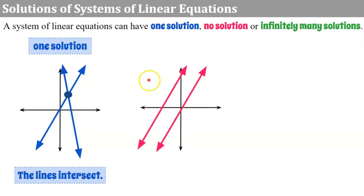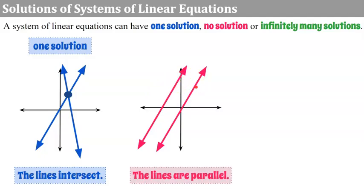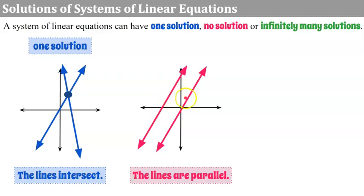Another thing that can happen is you could graph the lines and they're parallel to each other. When two lines are parallel to each other, they will never intersect, so there will be no point that both lines have in common, therefore there is no solution.